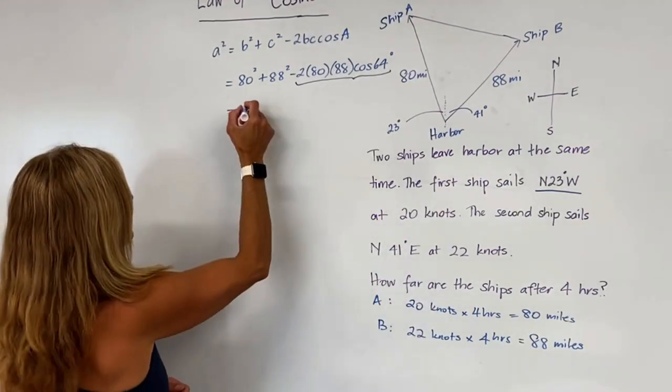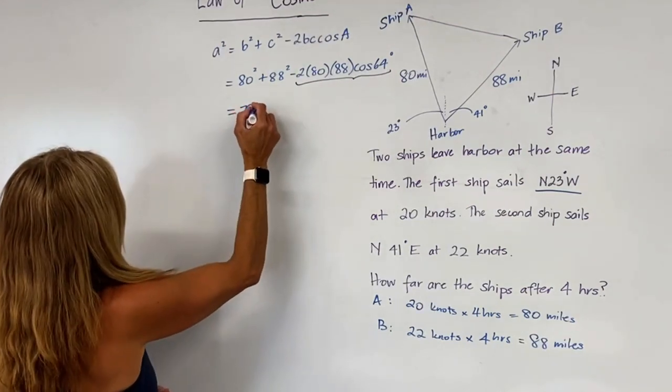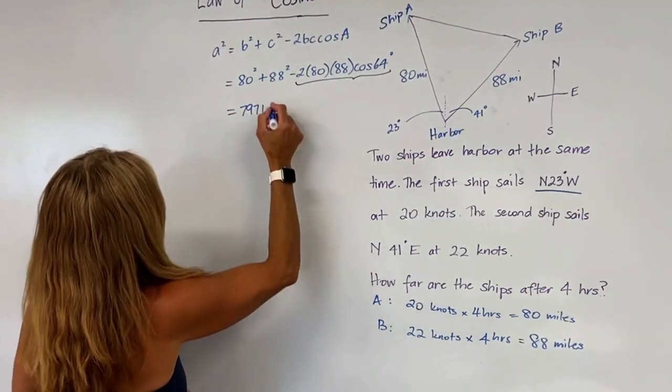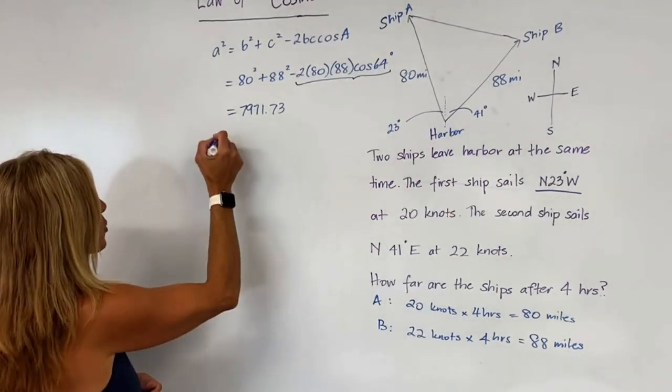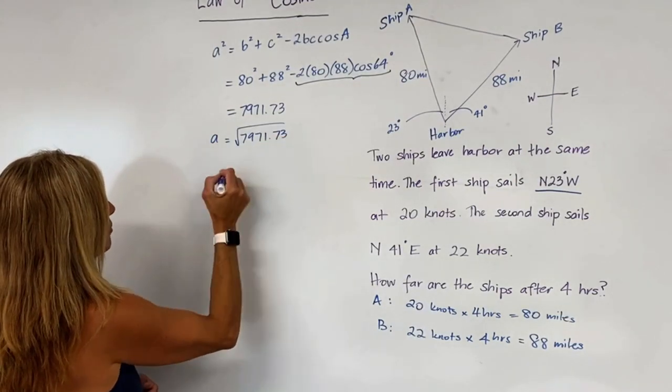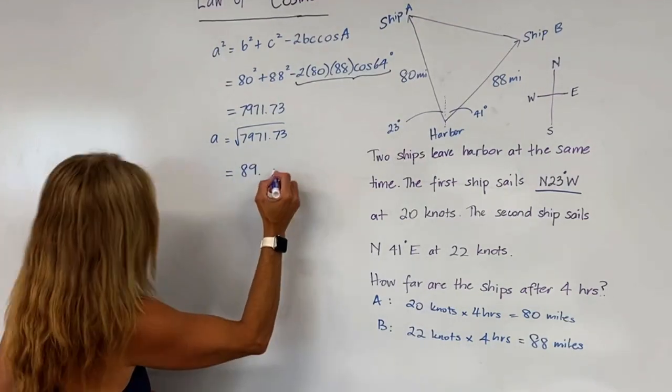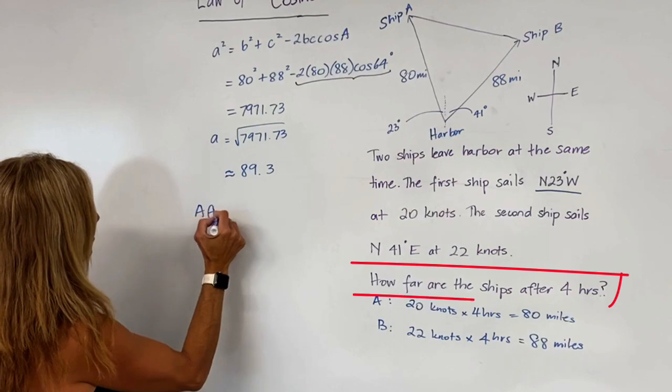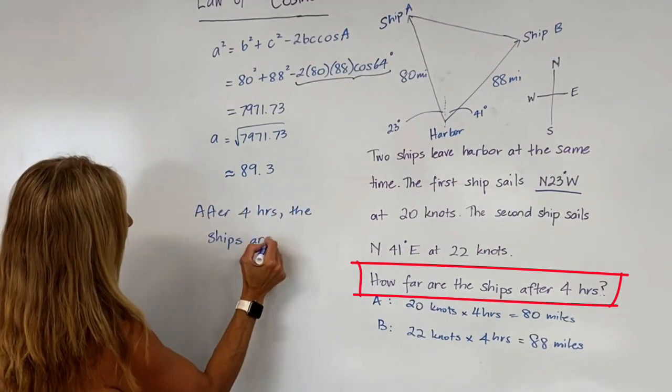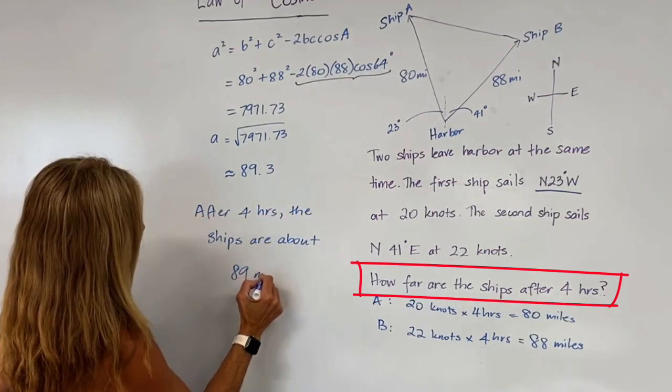The value of this is 7,971.73. Remember, this is a squared, so we need to take the square root, which gives us approximately 89.3. So after four hours, the ships are about 89 miles apart.